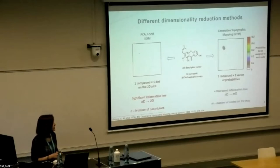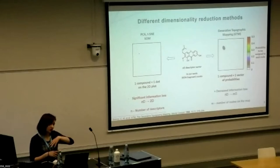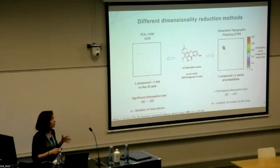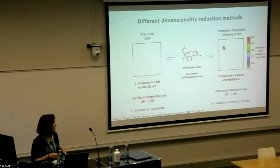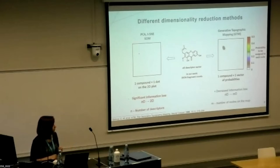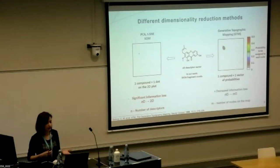GTM allows you to represent a molecule not as a dot on the map but as a distribution of probabilities of the molecule being assigned to all points on the map. Most of them will be zero probabilities — you'll have empty areas — but there will be a peak where a compound is more probable to land, which decreases the information loss during dimensionality reduction.